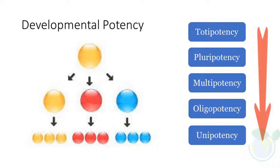Totipotent cells derived from a fertilized egg, termed as zygote, or blastomeres, have the potential to generate all the embryonic and extraembryonic cells — a potential referred to as totipotency — and such cells can give rise to the whole organism. While pluripotent stem cells may give rise to all types of cells in an organism, multipotent and unipotent stem cells remain restricted to particular tissues or lineages.